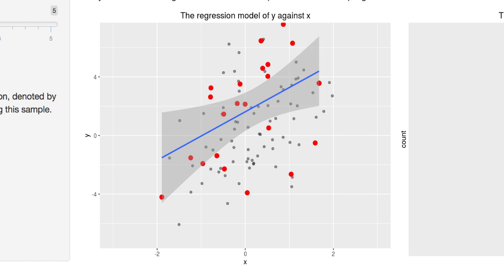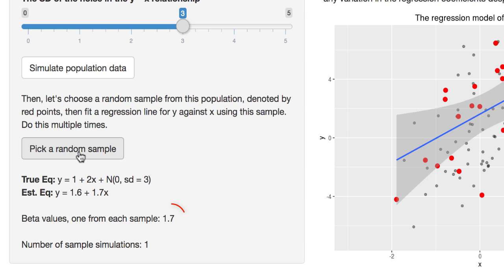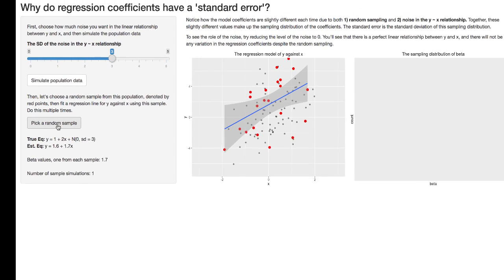So in the sample the blue line shows us the line of best fit and we can see for example that the gradient of that line is 1.7. So the true value is 2, the value we've got in our sample is 1.7.